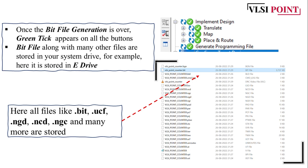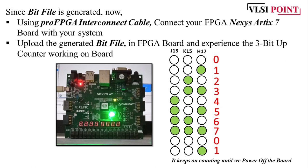Along with the .bit file, other files are also generated: .bit, .ucf, .ngd, .ncd, and .ngc — all stored in your drive. Finally, take a JTAG FPGA interconnect cable, connect your Nexus Arctic 7 board to your system, and upload the .bit file to the FPGA board. You can then observe the LEDs to see how your design is working. Here I have written the code for a 3-bit up counter and you can see the LEDs counting from 0 to 7 and back again — the counter is working properly.